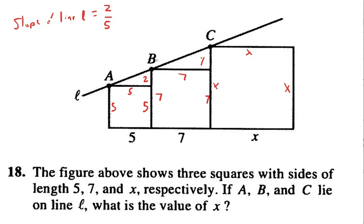Here we had a rise of 2 and a run of 5. Here we have a rise of y and a run of 7, but that has to be the same ratio. So I can say 2 fifths equals y over 7. Then I solve: 5y equals 14, and y equals 14 fifths.